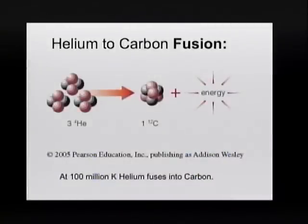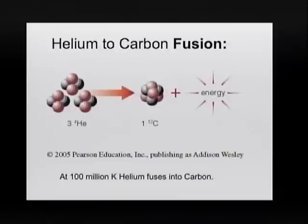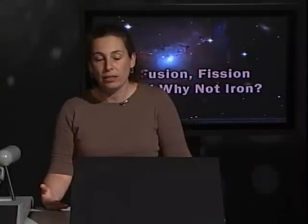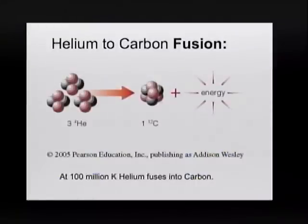One fusion reaction that happens in the interior of stars is that three atoms of helium combine to form one atom of carbon. It forms one atom of carbon, and what's nice — what helps the star — is the fact that it releases energy in this process. At the end you have the same number of protons and the same number of neutrons that you started with, but somehow some energy was released.